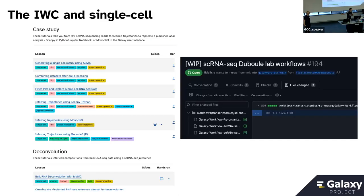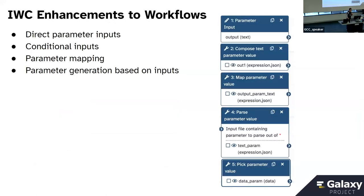Currently, we have a bunch of single cell workflows available from Galaxy Training, and a few are being put into the IWC at the moment. But again, these are not going to be catch-all cases where anyone can just bring their data and start running it. The enhancements highlighted earlier — direct input parameters, conditional parameter inputs, parameter mapping and parameter generation based on inputs — allow for what we're starting to call meta-workflows, where you can have domain-wide workflows where you choose a path.